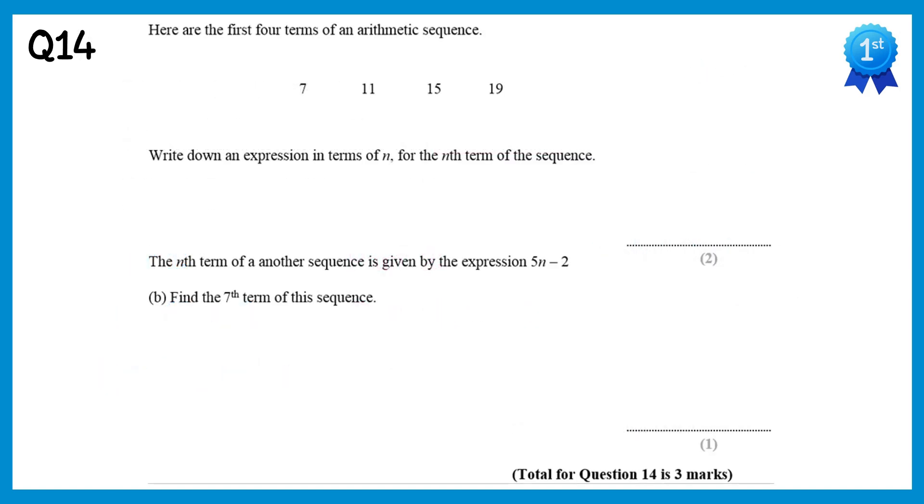To find the nth term we first of all look at how you get from one term to the next. In this sequence it's add 4, so the sequence must be a 4n sequence. If we then write the 4 times table above the sequence, then think of how to get from the 4 times table to our sequence. In all cases here it's add 3. So the nth term is 4n add 3.